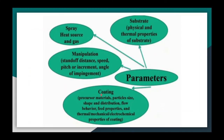The key process parameters in thermal spraying are: nozzle-to-substrate distance, velocity of spraying, the type of heat source used, and the powder particle size. These parameters play an important role in determining the microstructure, composition distribution of the coated layer, and ultimately the coating properties.